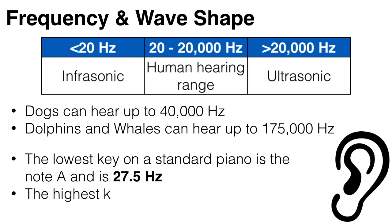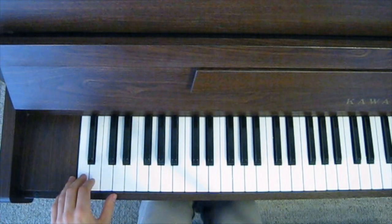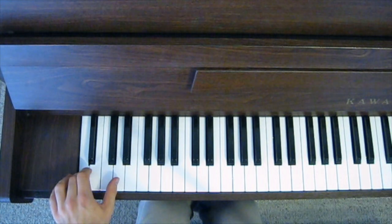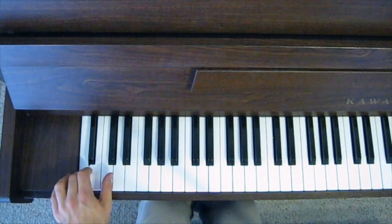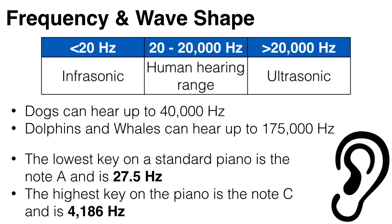And just as a point of reference, the lowest key on a standard piano is the note A and is 27.5 hertz. While the highest key on the piano is the note C and is 4186 hertz.